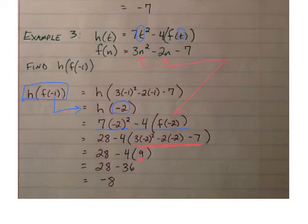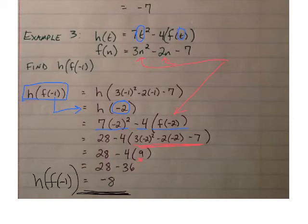So we have 28 minus 4 times 9, which is 28 minus 36, which is negative 8. So in the end, h of f of negative 1 is equal to negative 8. I encourage you to check out some more examples in my Calculus BC video and my soon-to-be-posted pre-calculus video.